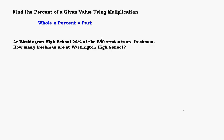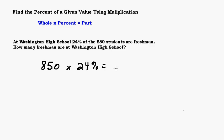So there are 850 students at the entire high school and 24% of those students are freshmen. In this case, the 850 represents the whole population of the high school. We're trying to find out what part of the population are freshmen. So using this formula, we're going to take the whole — which is 850 — times the percent, which is 24%. That gives us the part of the school that's freshmen, which is the number of freshmen.